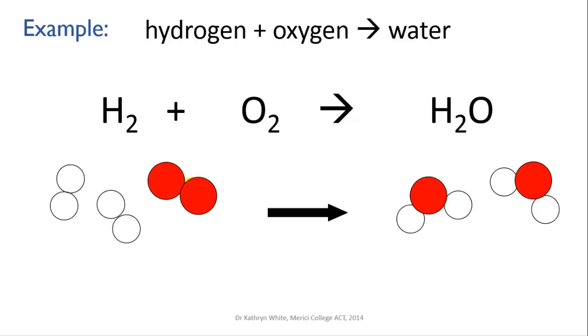The convention is that if there is no number in front of the molecule or atom, that just means there's one of them. If there's more than one, then we have to indicate it with a number.